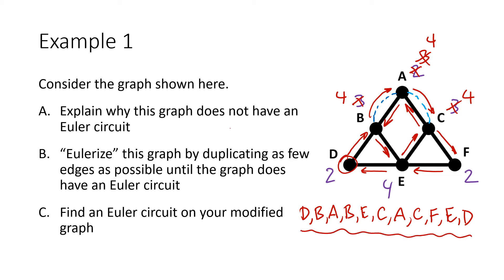This is the Euler circuit on the modified graph. Taking it back to the original graph, this circuit has two retraces: it walks along the edge from A to B twice, and it walks along the edge from A to C twice. So it's not an Euler circuit for the original graph, but it is a circuit with only two retraces. That's the Eulerizing process.